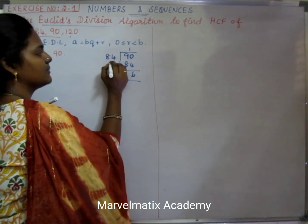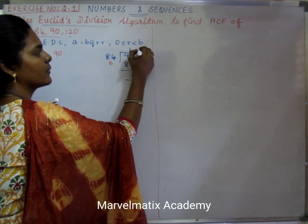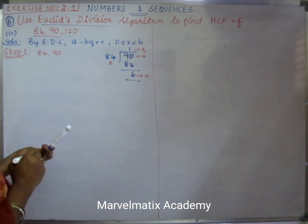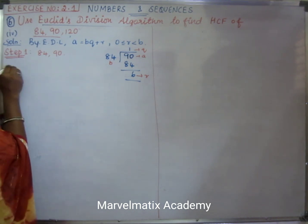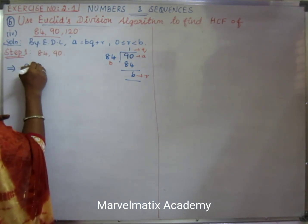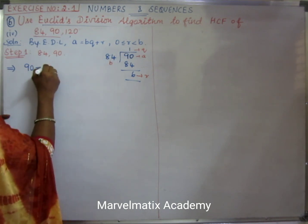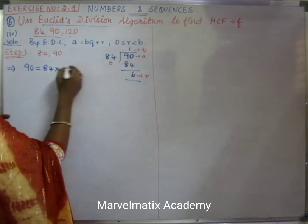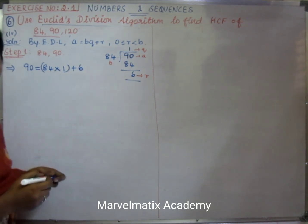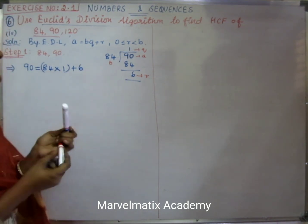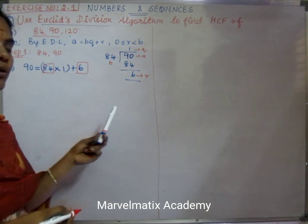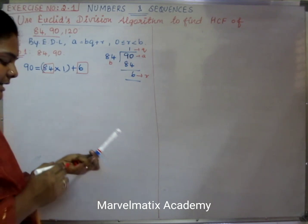84 with remainder 6. This is B, this is A, this is the quotient, and this is the remainder. So: 90 equals 84 into q=1 plus remainder 6. The b value is 84, the r value is 6.